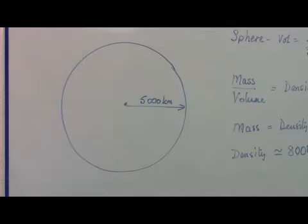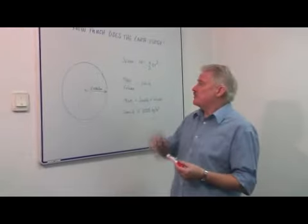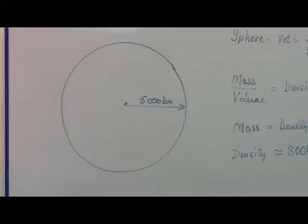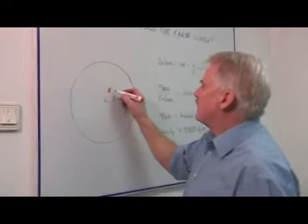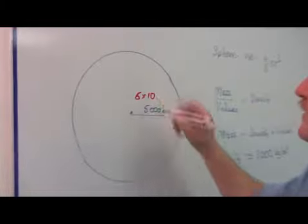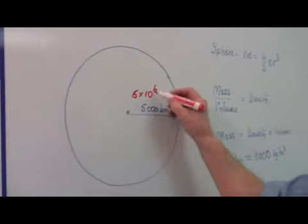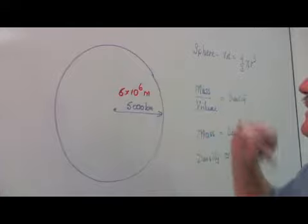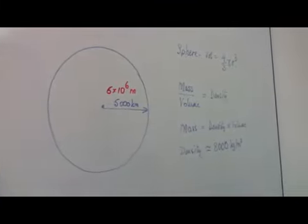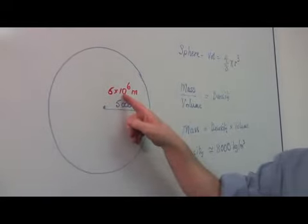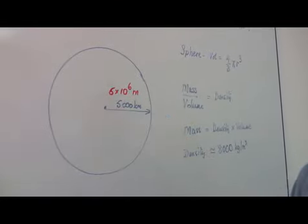But of course we know some rough ideas of size, and I'm using a radius of 5,000 kilometers or 5 times 10 to the power 6 meters is the actual radius of the Earth. 10 to the 6th is a million, so 5 million meters.